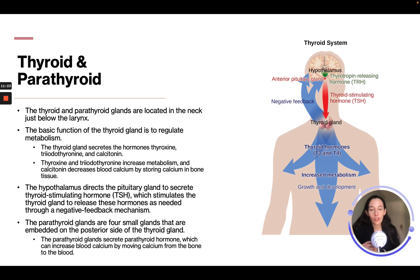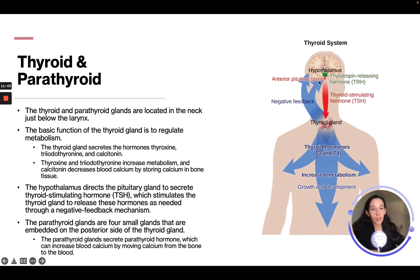The parathyroid glands are four small glands embedded in the posterior side of the thyroid gland. The parathyroid gland secretes parathyroid hormone, which can increase blood calcium by moving calcium from the bone to the blood. The diagram shows the thyroid with the parathyroid, the hypothalamus above, and the anterior pituitary gland, with a negative feedback loop shown from the thyroid to the anterior pituitary.